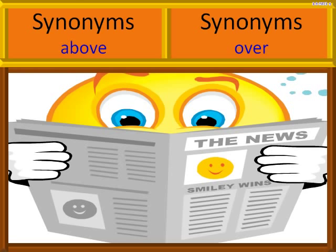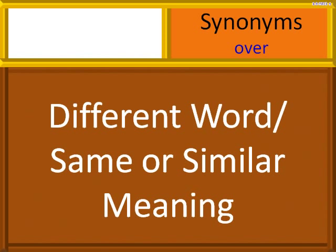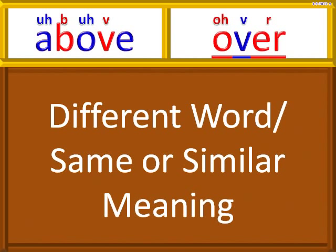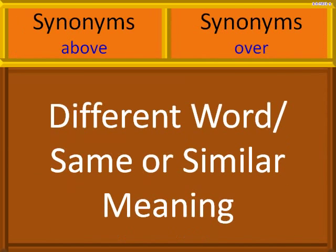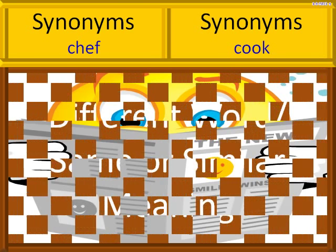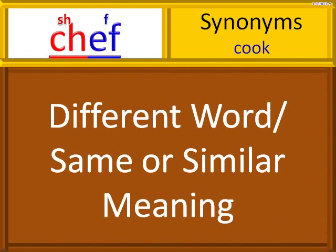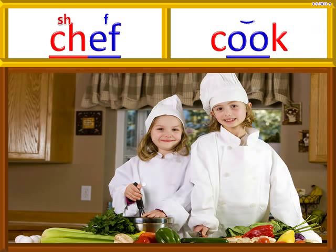Above means the same as over. Above, over. The bulb is over his head. The bulb is above his head. Chef is the same as a cook. Chef, cook. The two little cooks here are making a salad. The two little chefs here are making a salad.